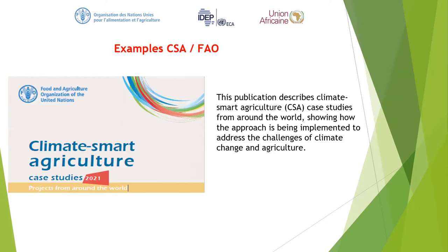An example of climate smart agriculture resources is a FAO publication from 2021 titled 'Climate Smart Agriculture Projects from Around the World.' It describes climate smart agriculture case studies from around the world, showing how the approach is being implemented to address the challenge of climate change and agriculture. The onus is on you to go read and understand how climate smart agriculture is being practiced globally.